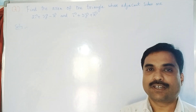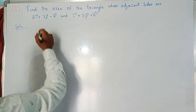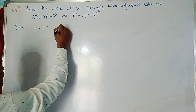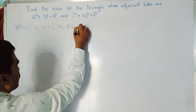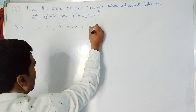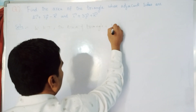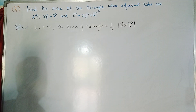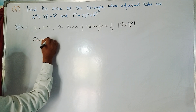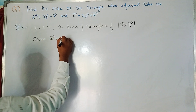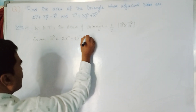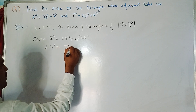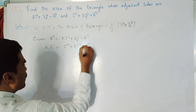So we write the formula: area of triangle = half × |a × b|. Given: a = 2i + 3j - k and b = i + 3j + k. Now first we find the cross product a × b.